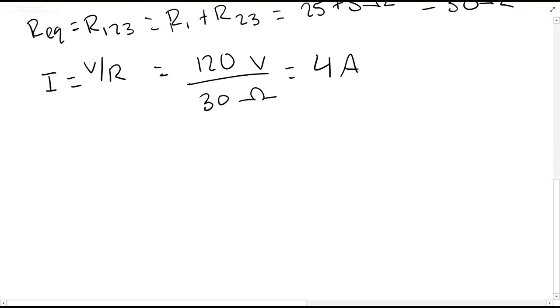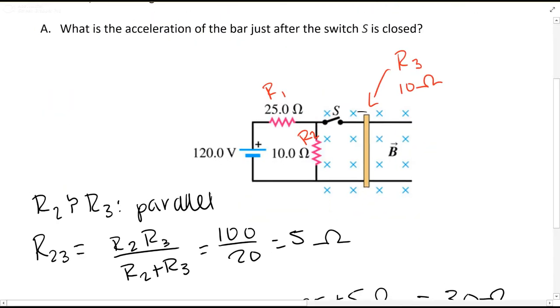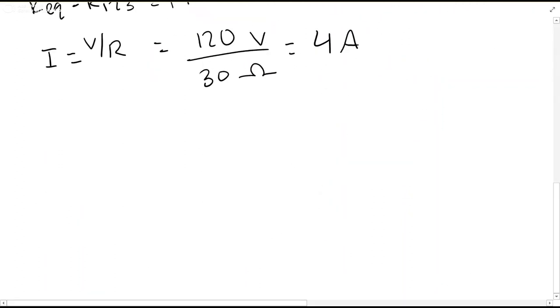Now for the voltage within R23, the voltage in this parallel circuit, we have V equals IR. So voltage equals our current of 4 times our resistor R23, which is 5, to get 20 volts.